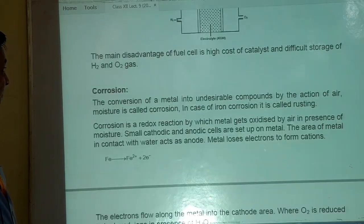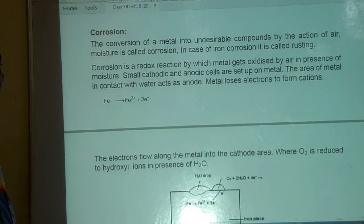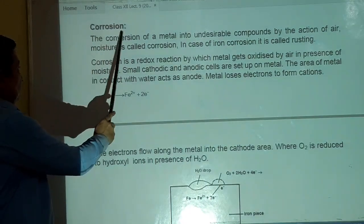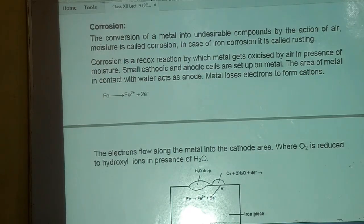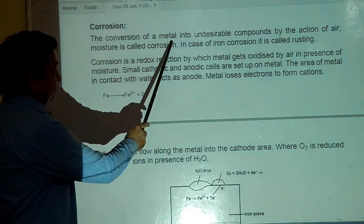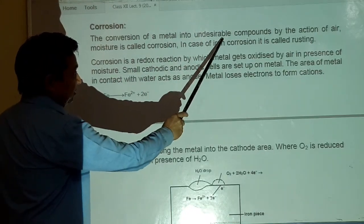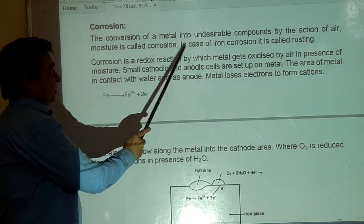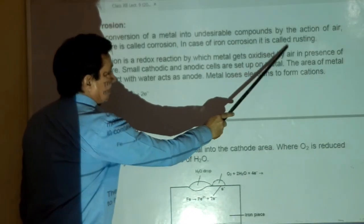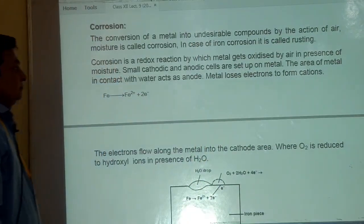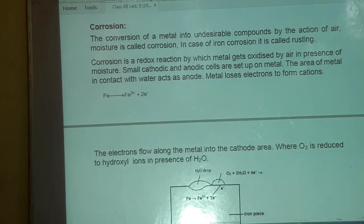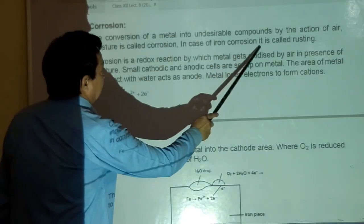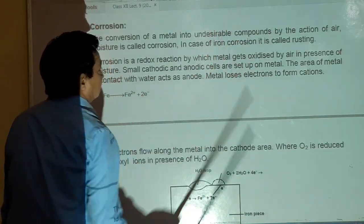इसके बाद एक last topic है. उसके बाद यह chapter end हो जाएगा. Corrosion. The conversion of a metal into undesirable compounds by the action of air and moisture is called corrosion. In case of iron, corrosion is called rusting. जो iron में जंग लगती है उसको भी अपन corrosion बोलते हैं जो rusting होती है और यही अपने syllabus में है corrosion of iron या rusting of iron.